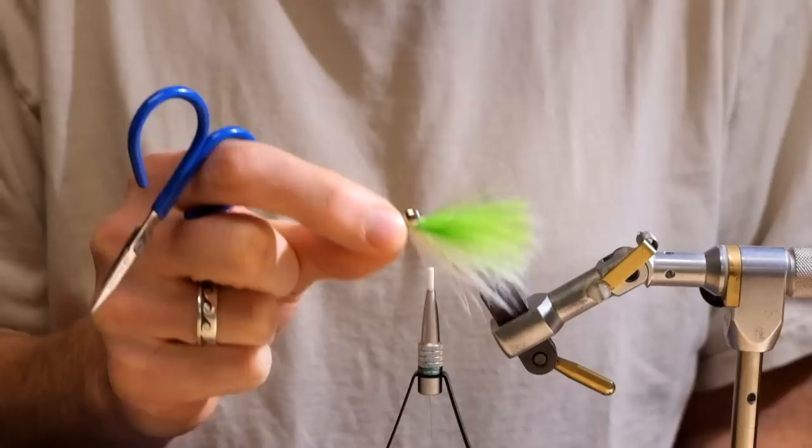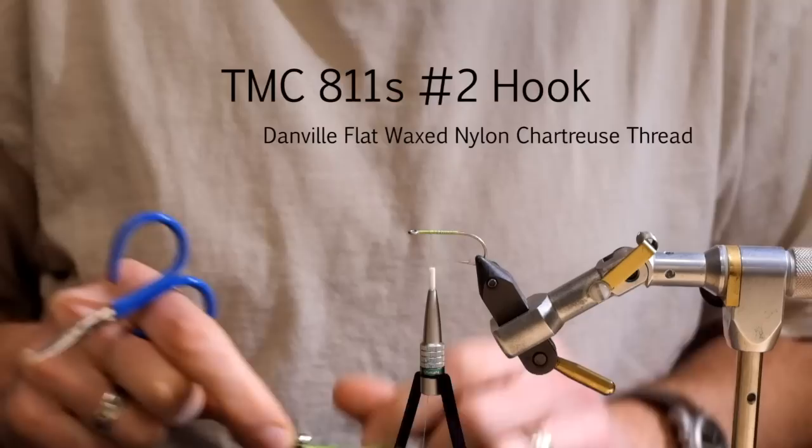Killer coho fly, especially good for fussy cohos that aren't grabbing big flies. This comes in a bunch of different colors. You could tie it in pink and white, pink and purple, but today we're gonna do the chartreuse and white.